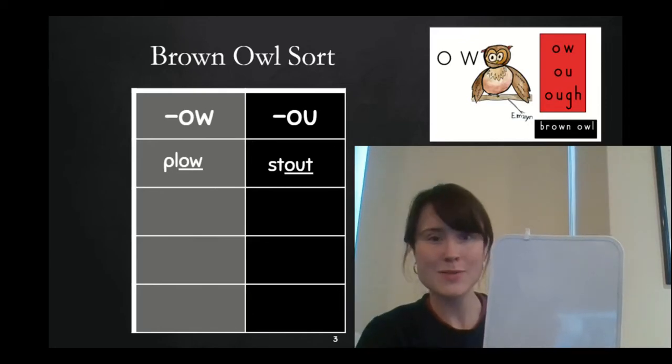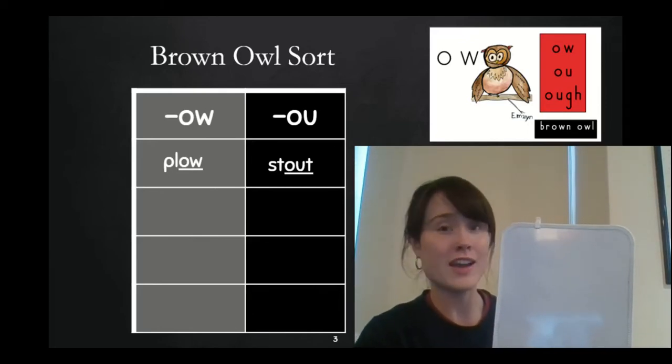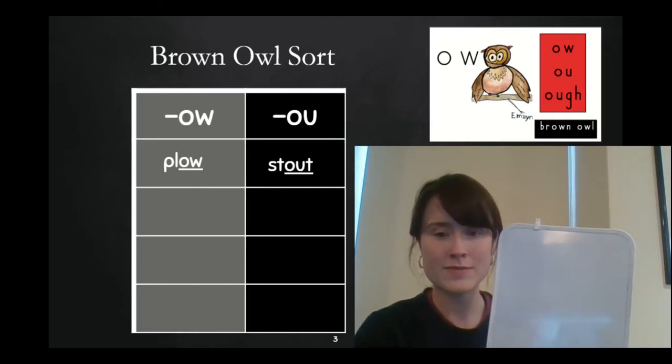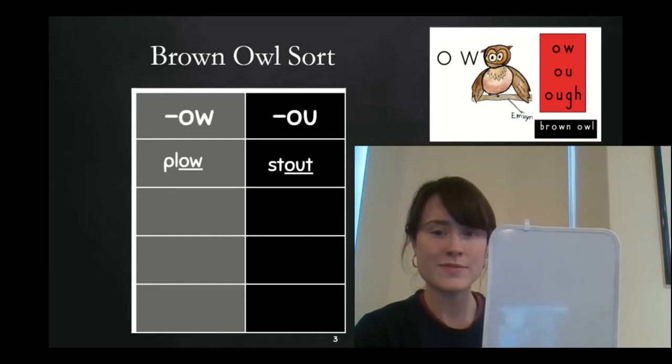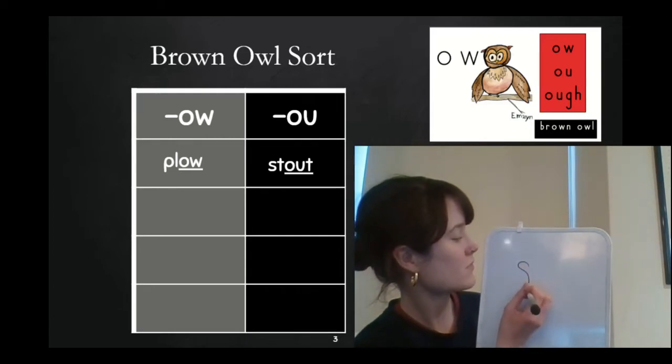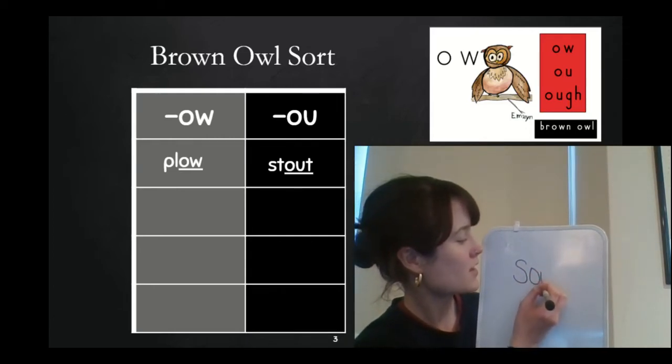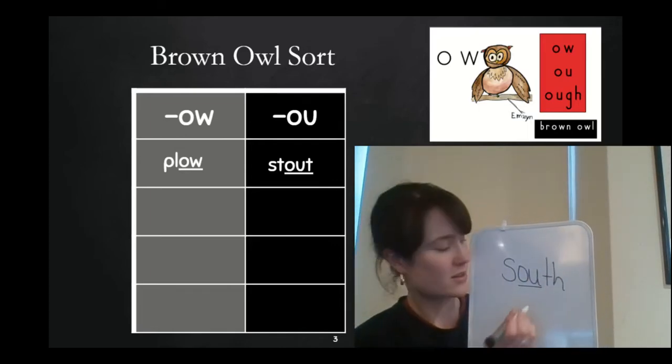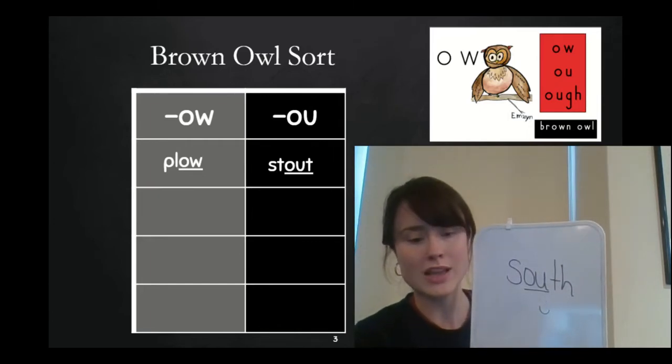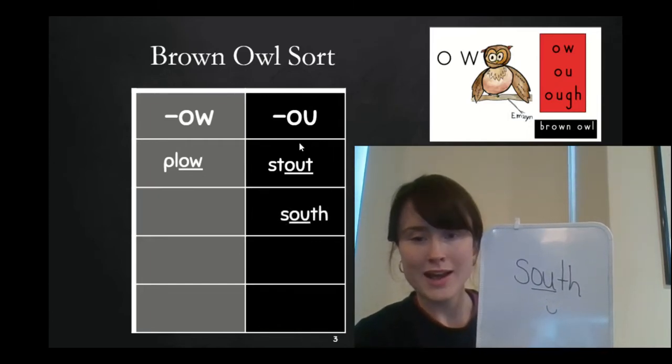Give yourself a check mark if you build plow with O-W says ow. All right, up next, build the word south. In science, we learned about our directions, and south was one of them. Build the word south. O-U says ow. South. Nice work, friends. Give yourself a smiley face if you knew that we built south with O-U. I'm going to add it to my list.